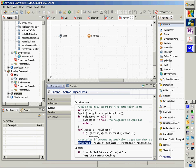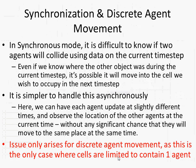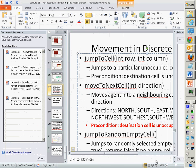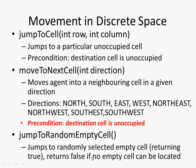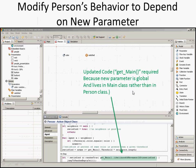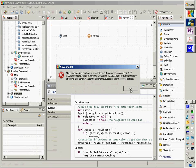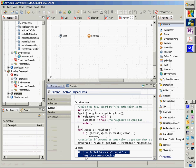Note that 'jump to random empty cell' is not jumping to someone who is like me — just jumping to a cell elsewhere in this space. AnyLogic has built-in primitives for this: 'jump to cell,' 'jump to next cell,' 'jump to random empty cell.' This jump to random empty cell takes no arguments — it just jumps to a uniformly randomly selected empty cell, and returns false if no empty cell can be located. 'Move to next cell' requires the destination cell to be unoccupied as a precondition.